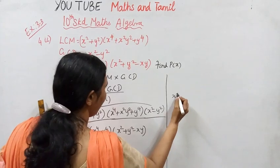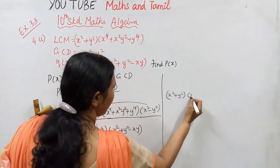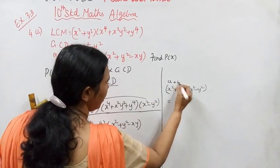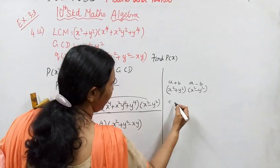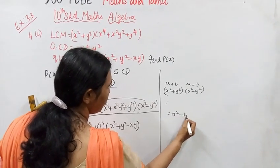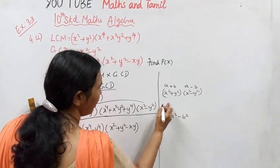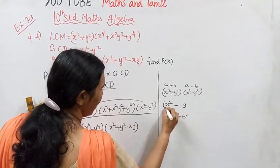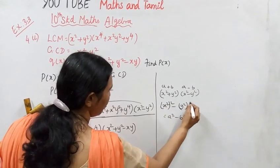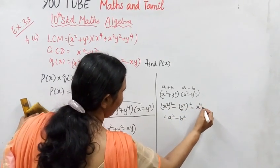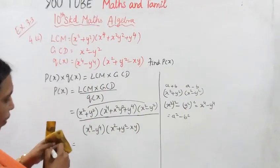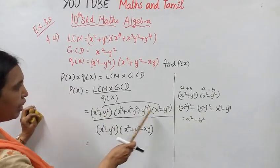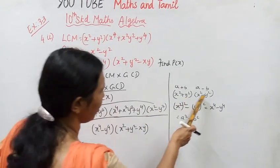Now, x squared plus y squared into x squared minus y squared — we apply the formula a plus b into a minus b equals a squared minus b squared. Here a squared is x squared, b squared is y squared, so a squared minus b squared gives x to the power 4 minus y to the power 4.